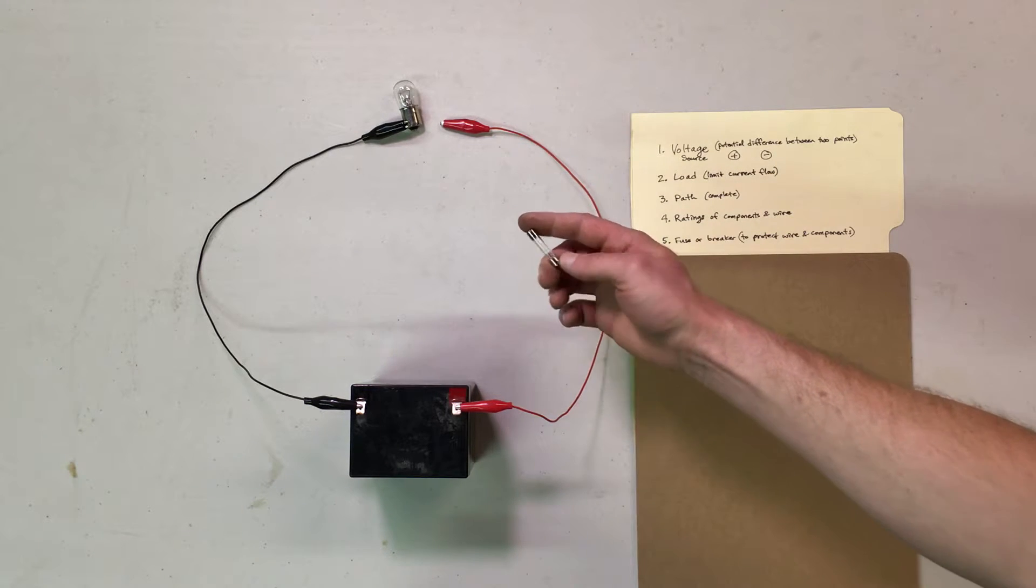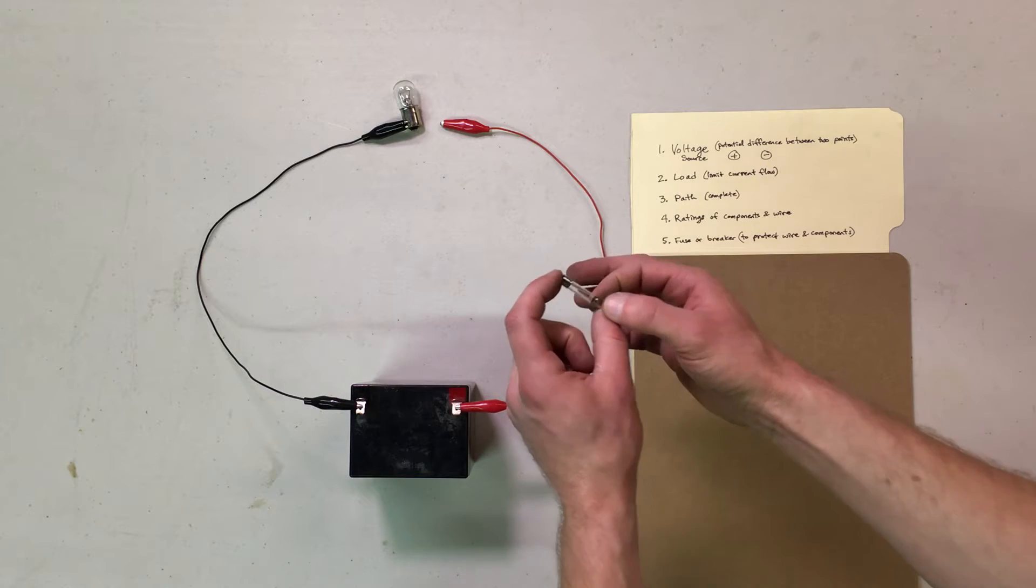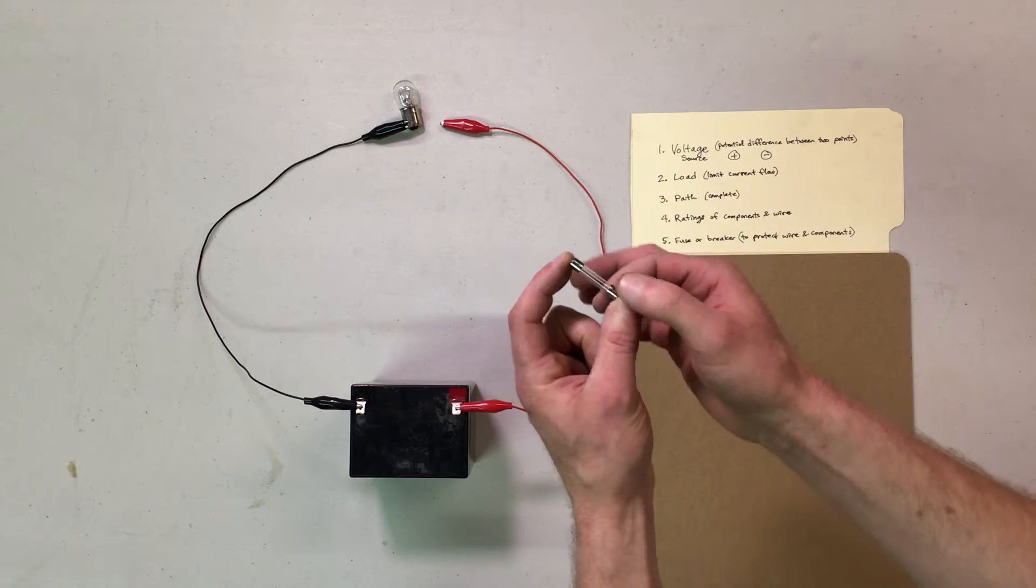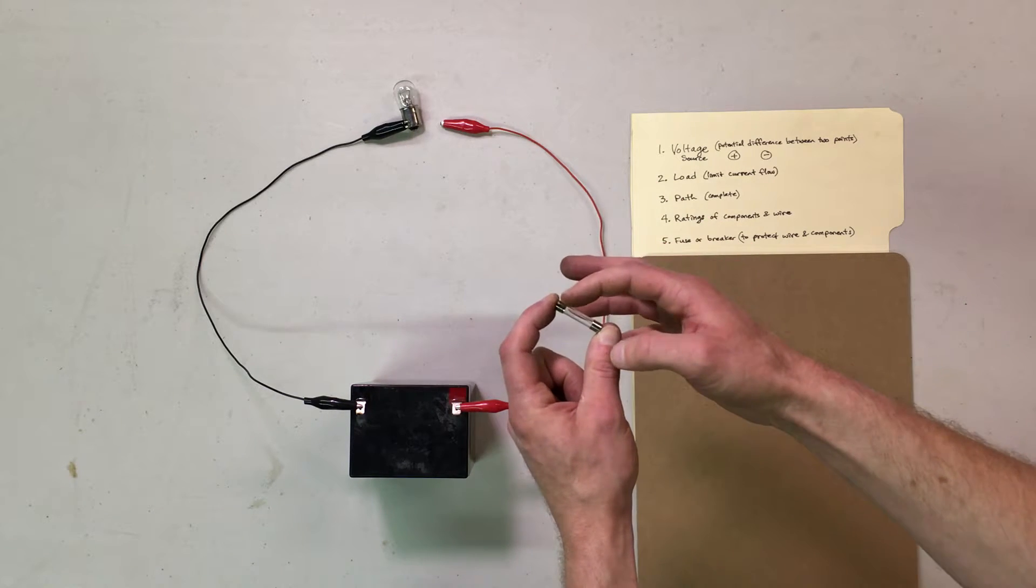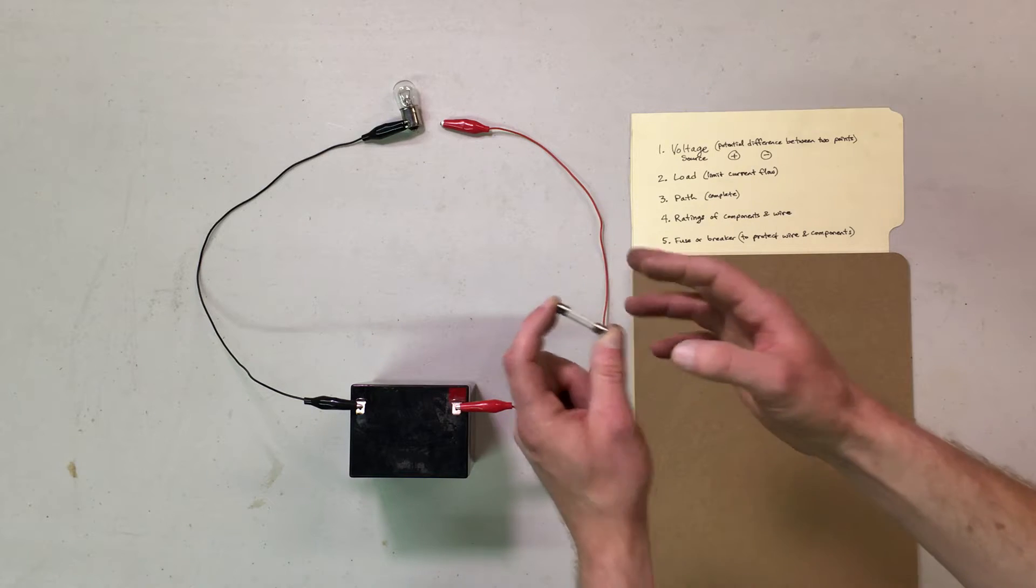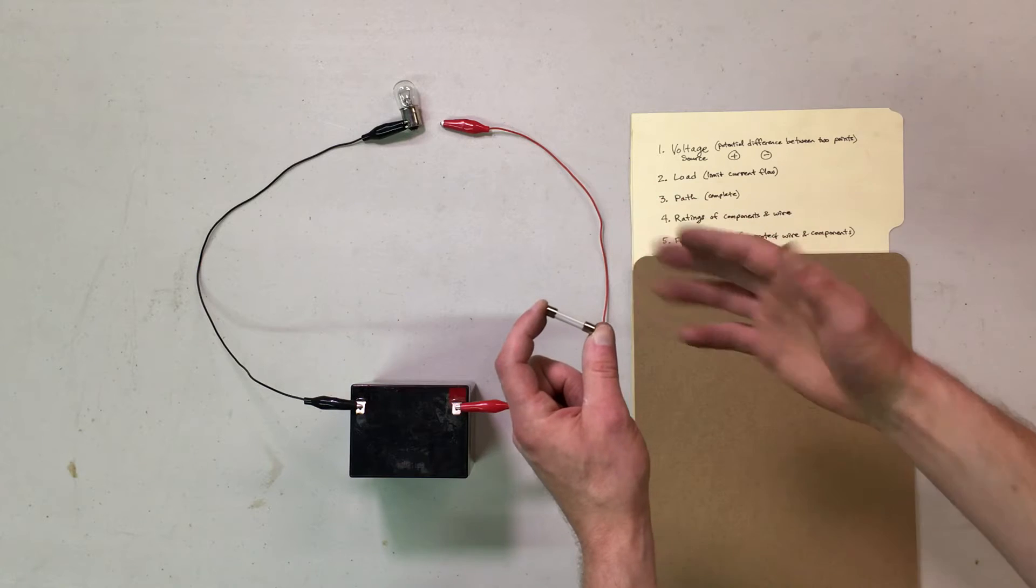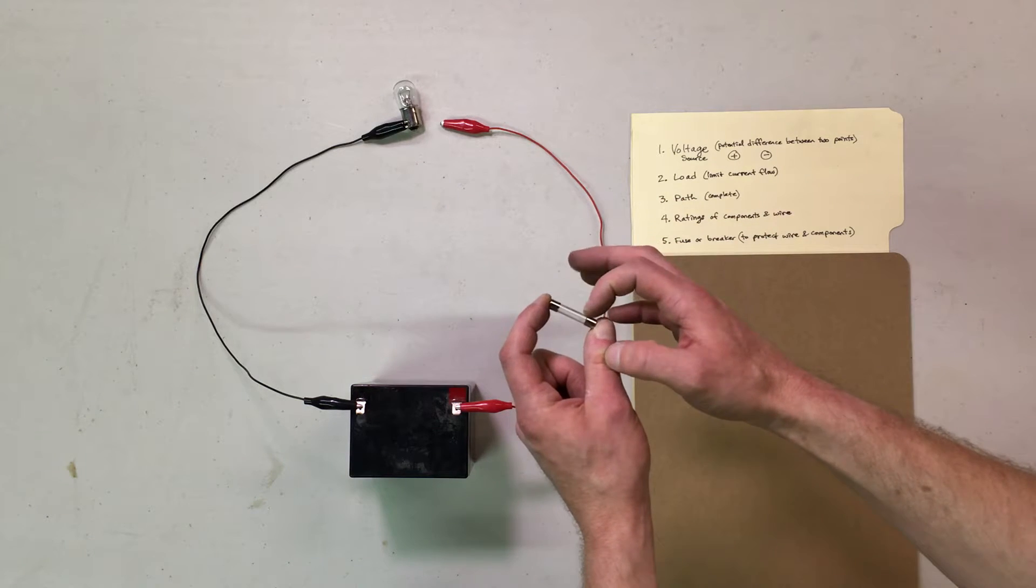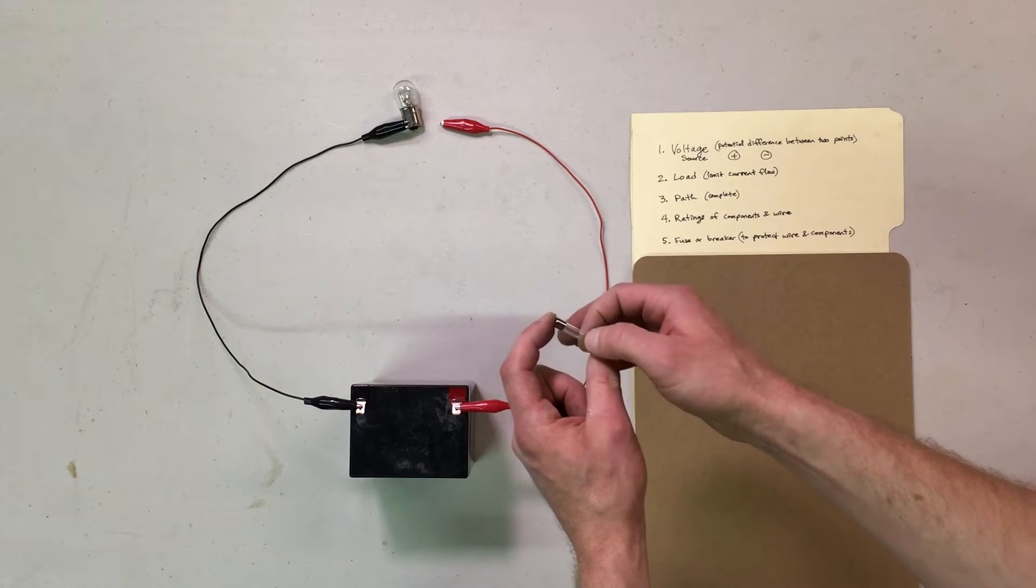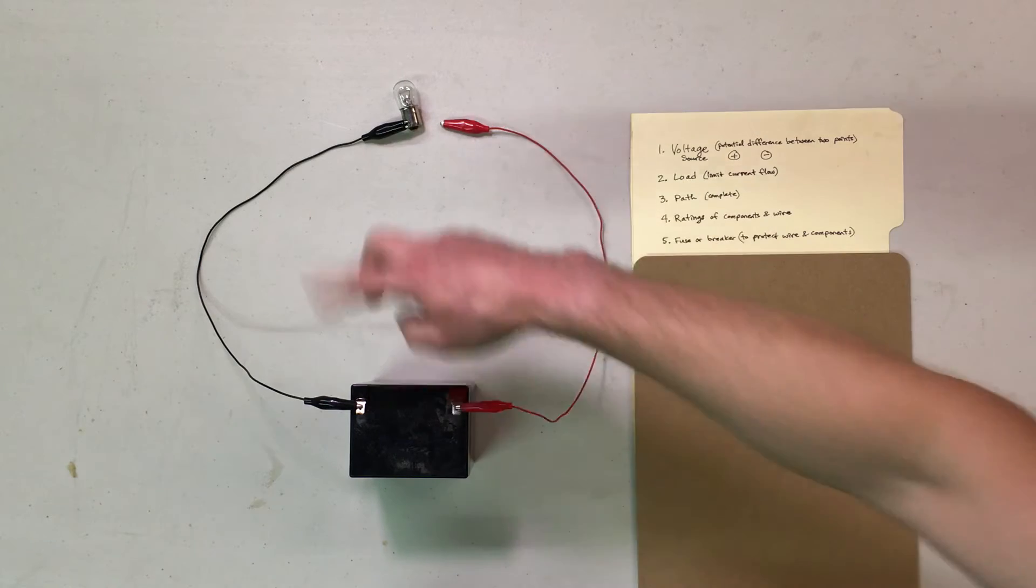You would use a fuse which is basically a very thin conductor. There's a teeny weeny wire inside this glass tube that will only withstand so much current and no more. So when you put more than that much current through it, that piece breaks, the little wire in there breaks instead of the whole circuit breaking.